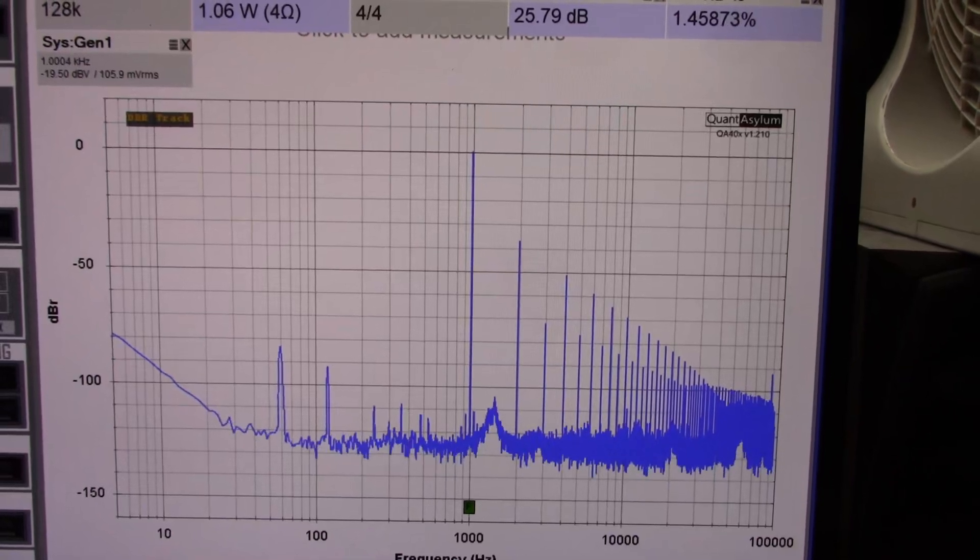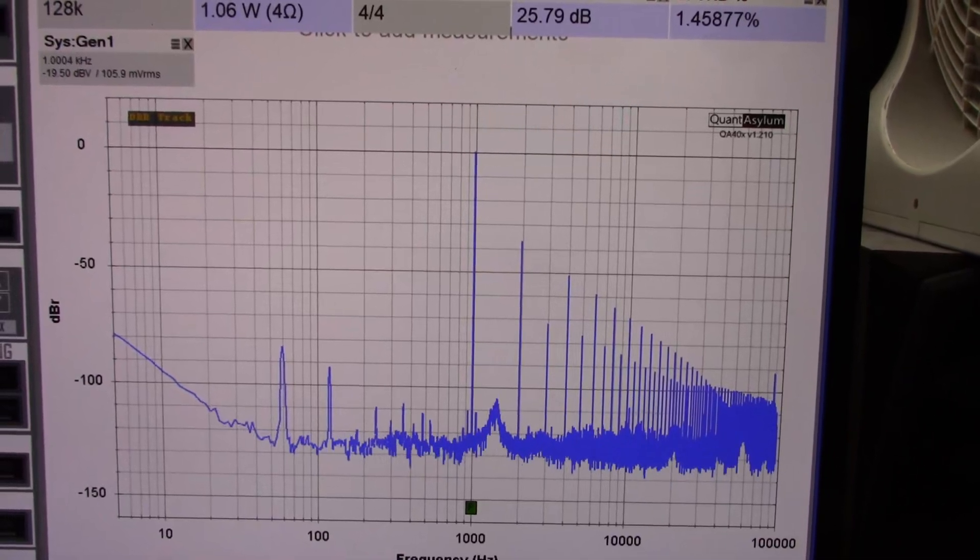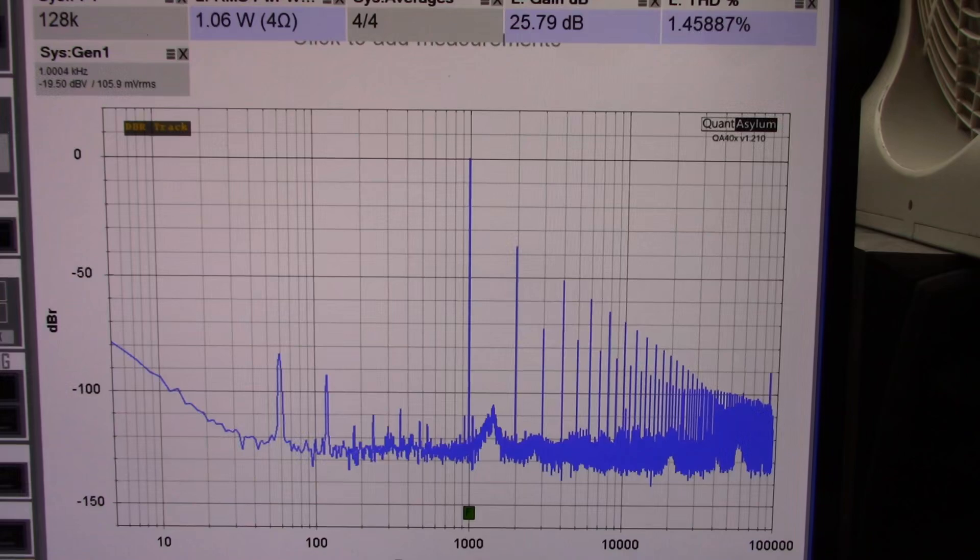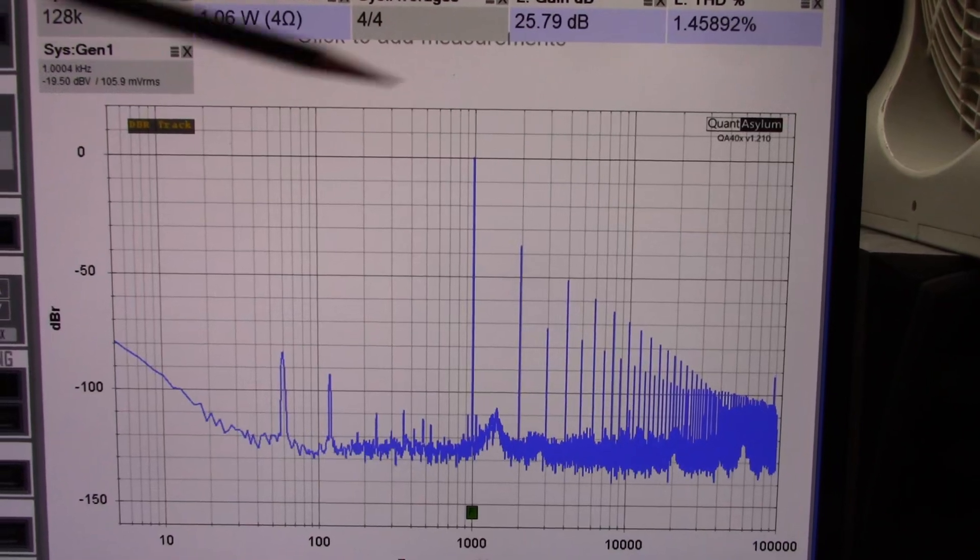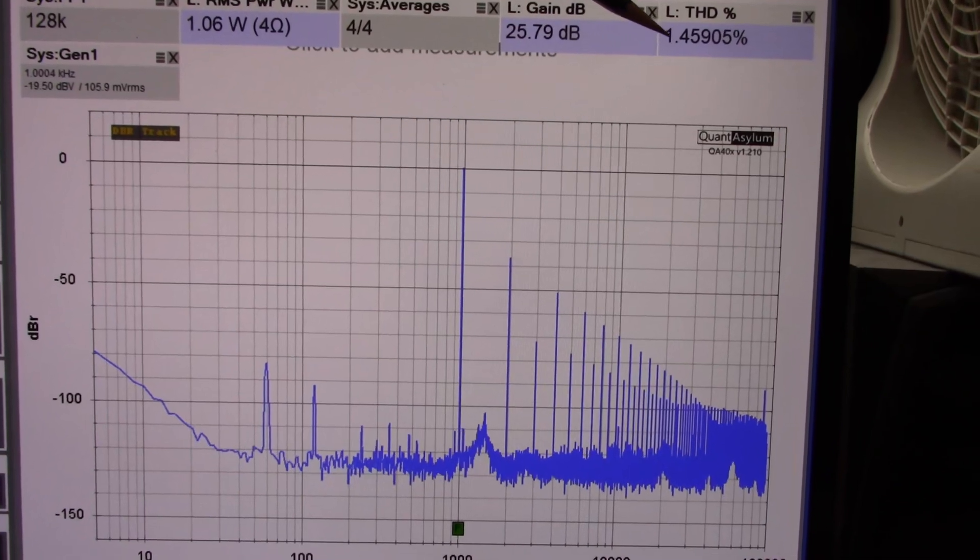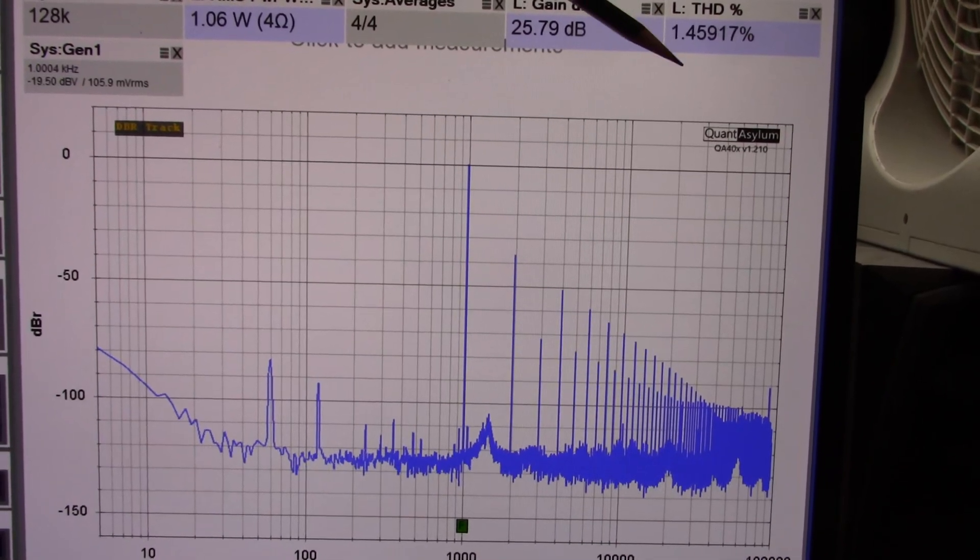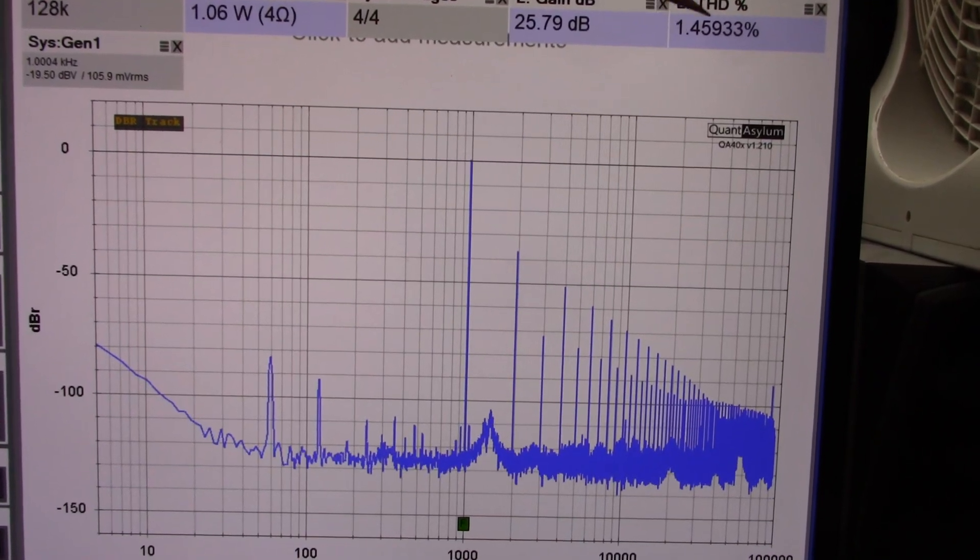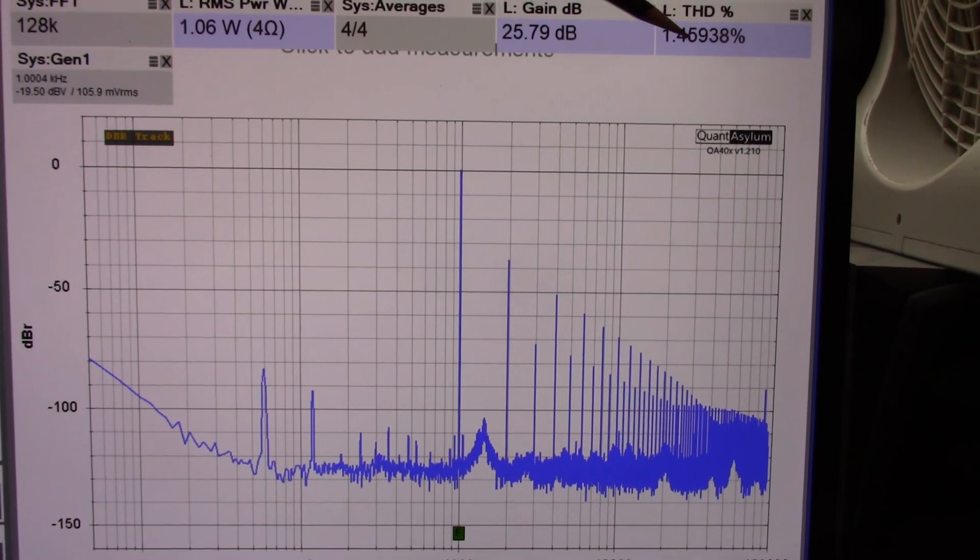Beginning with the kickoff measurement as I call it where I do a quick measurement at 1 kilohertz, 1 watt. With this amp I'm using 4 ohm loads. And ooh, distortion is pretty high. You know this is where the amp should do its best and we're measuring about one and a half percent distortion. Pretty bad.